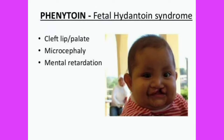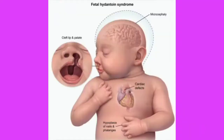Another feature is microcephaly — the head of the baby becomes small. Along with microcephaly, you also have mental retardation, which is a very important feature. Not only does the head become small, but these children also have mental retardation. In this picture you can see a baby with microcephaly — the dotted line shows how the head has shrunk. You can also see cleft lip and palate on the left side. Along with that, a very important characteristic is cardiac defect — these children are always suffering from cardiac defects.